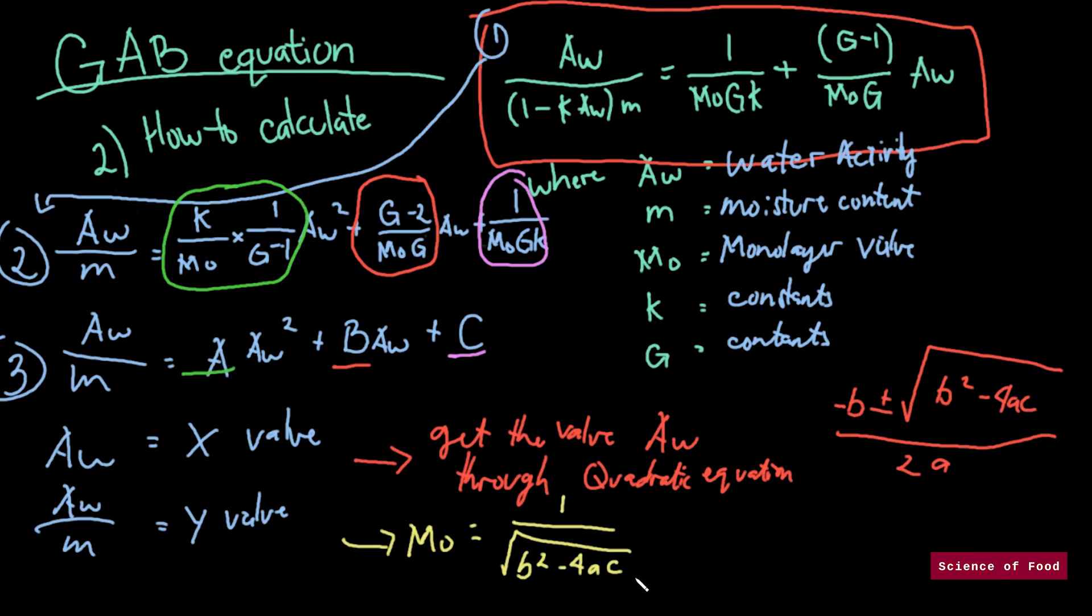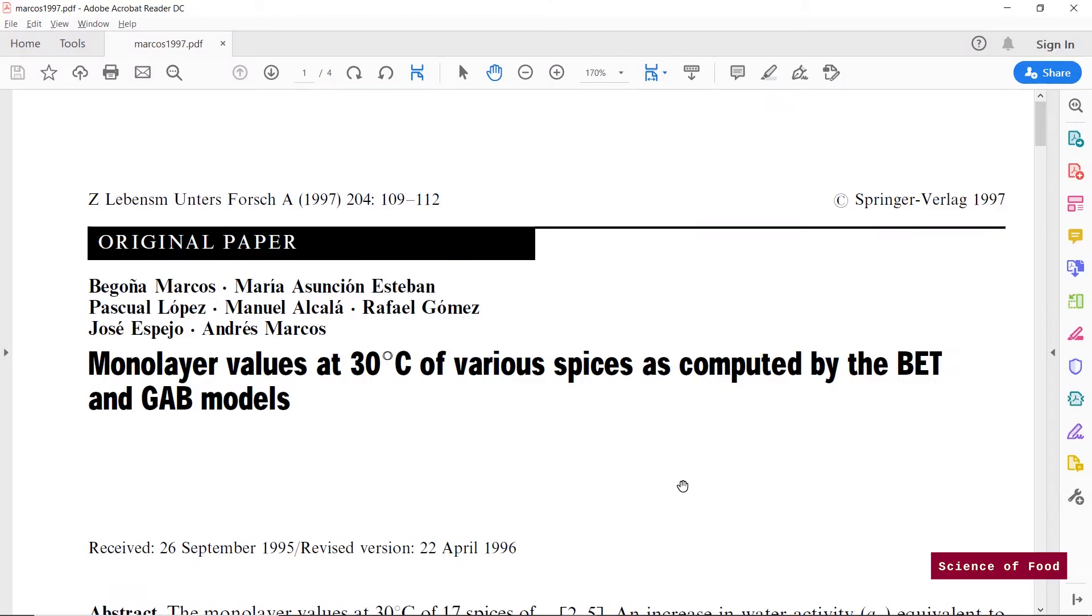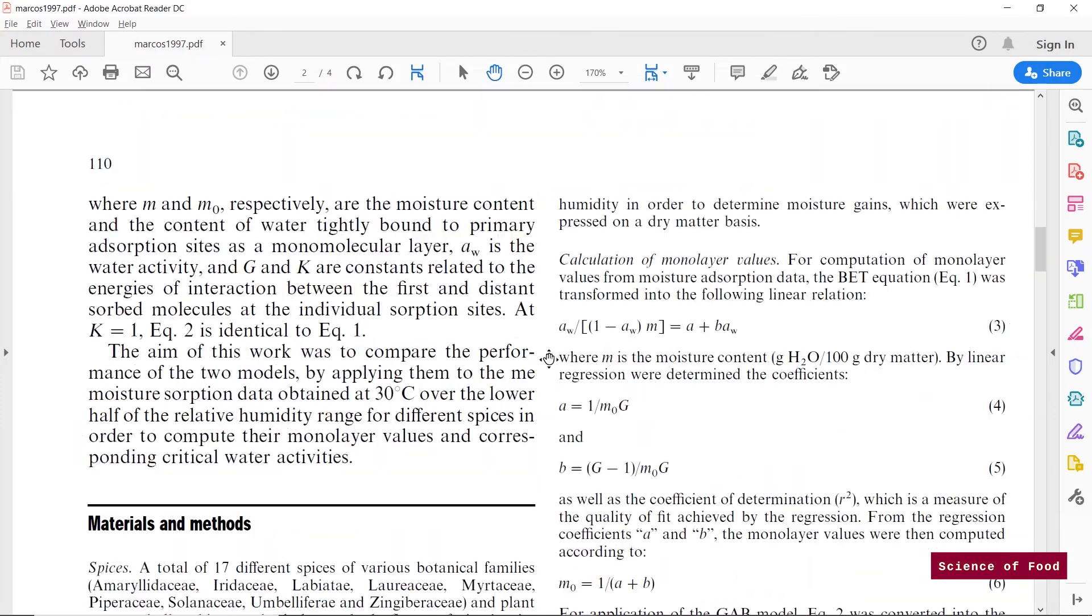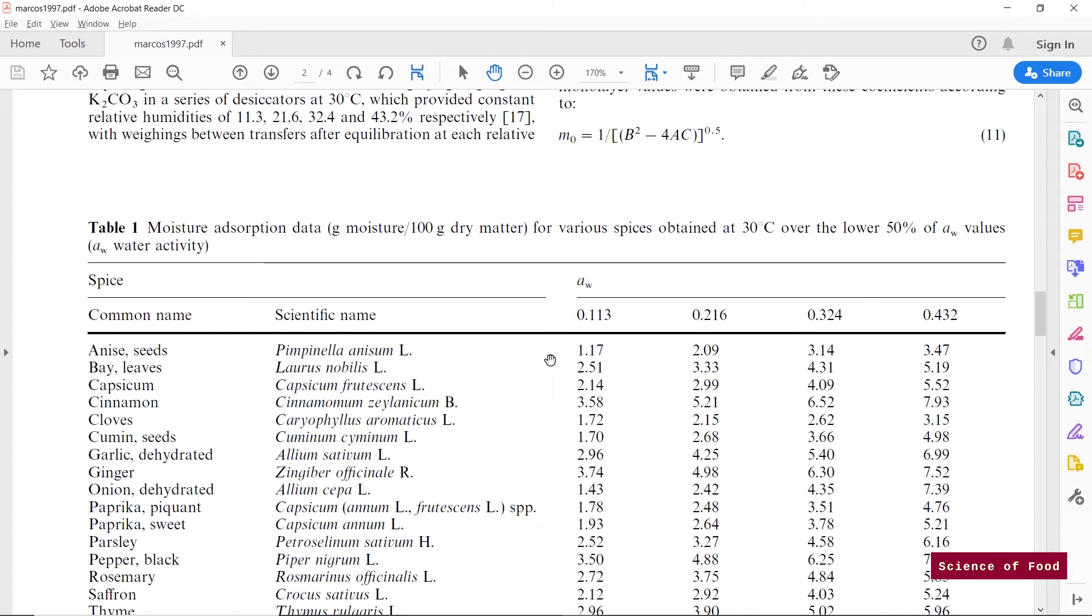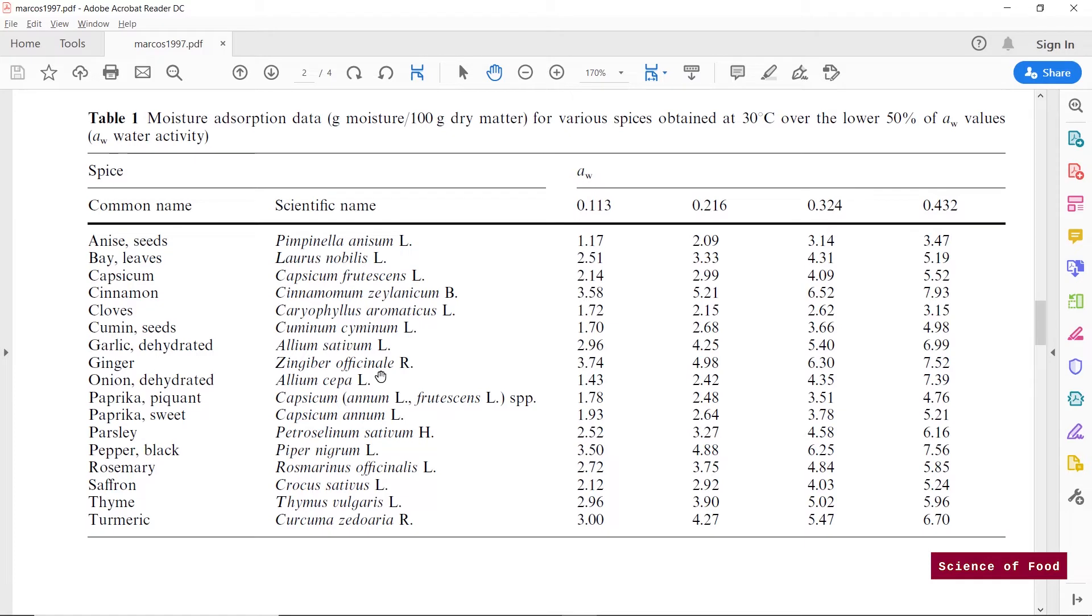So to demonstrate how to calculate using GAB equation, I've used this study, their data here. I'm gonna include the citation of this paper down in the description below so you can check. I've used the ginger, the data for ginger. Let's just highlight that and also take note of this water activity values. So let's go to Excel now.